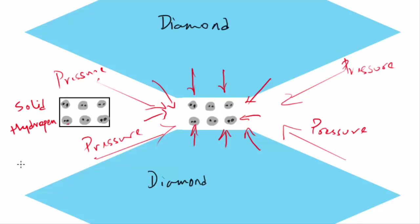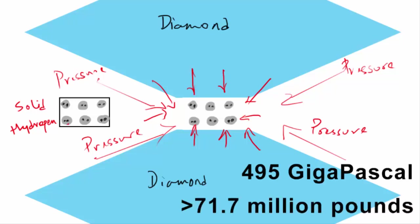Do you know how much pressure they had to apply on the liquid hydrogen to make it into a solid? It's more than the pressure that exists at the center of the Earth. It was somewhere around 495 gigapascal or more than 71.7 million pounds per square inch.